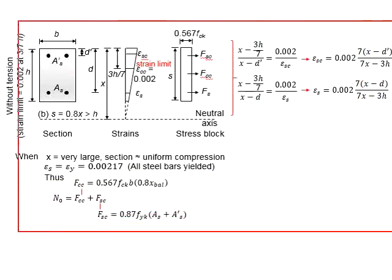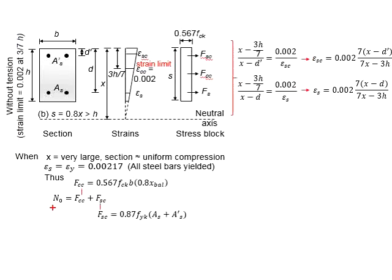This slide demonstrates the derivation process to determine the actual capacity of a column subjected to uniform compression load. This happens when the neutral axis is relatively large and falls beyond the sections of the column.